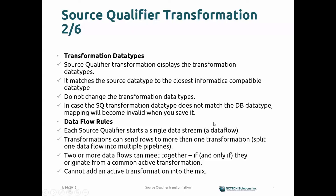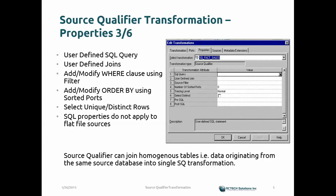Two or more data flows can be merged together depending upon the business case or business requirement. When you double-click a Source Qualifier Transformation in a mapping, it opens up a dialog box with multiple tabs: Transformation, Ports, Properties, Sources, Metadata, and Extensions.